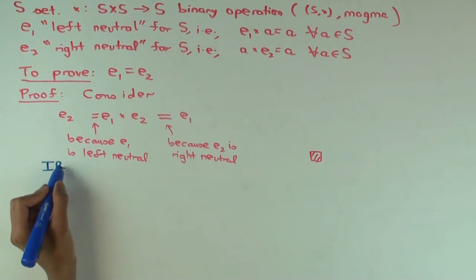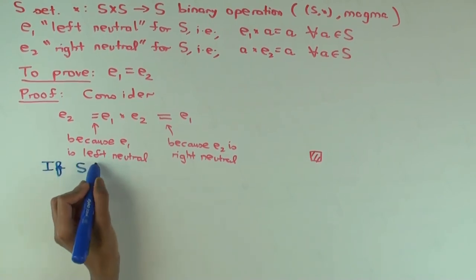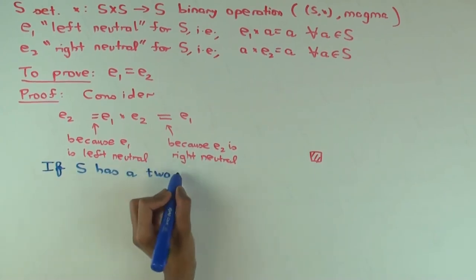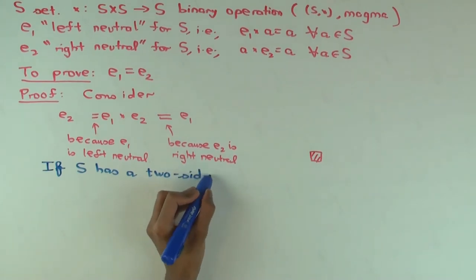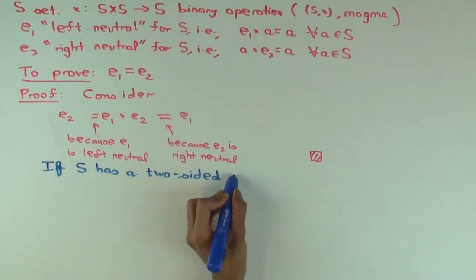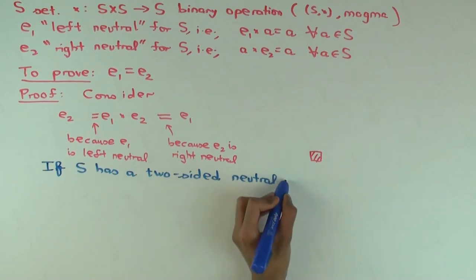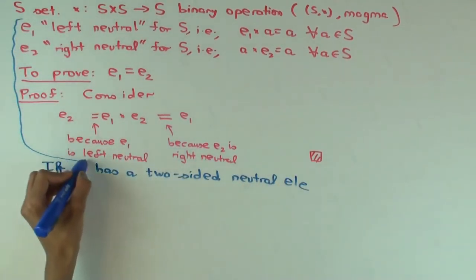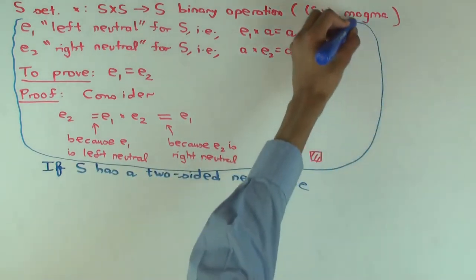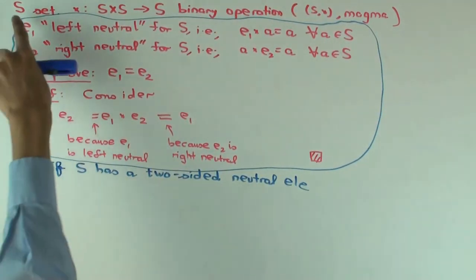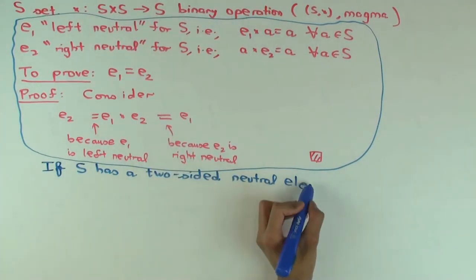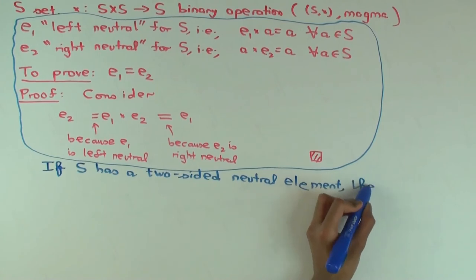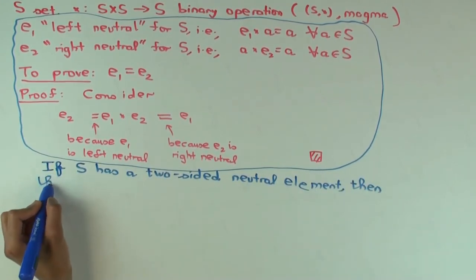Or let me go to it another way. So if S has a two-sided neutral element, what do you think I mean by two-sided? Both left neutral and right neutral. Okay, so sort of forget about this part, this is the first part. Now, I'm just assuming S is a set, you have a binary operation. Suppose S has a two-sided neutral element, then that is unique.